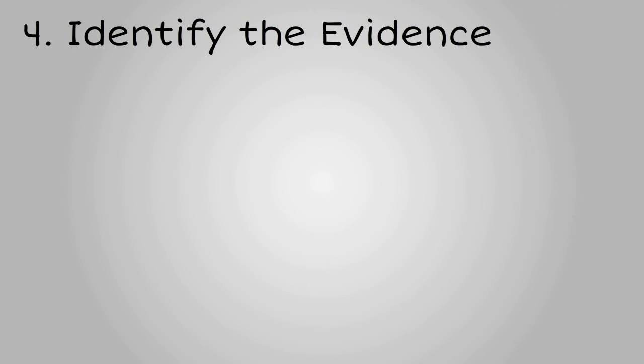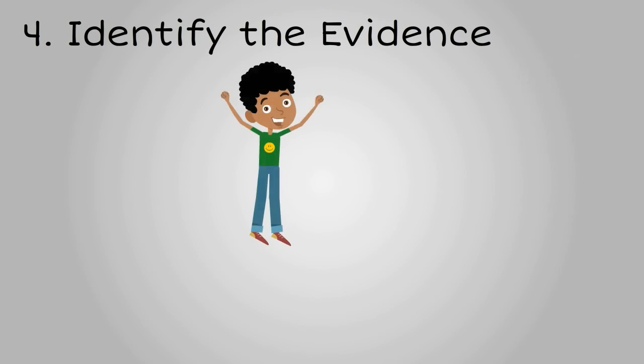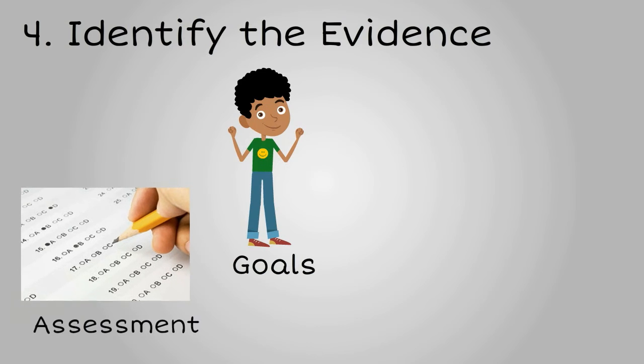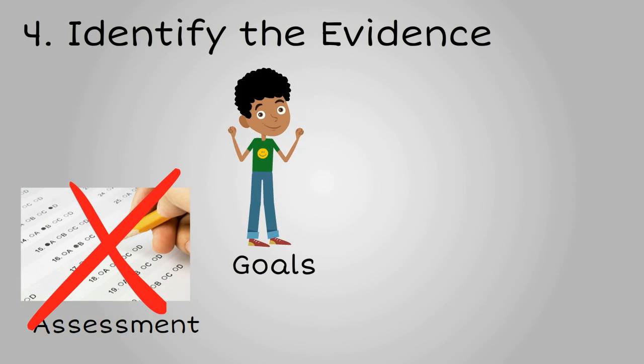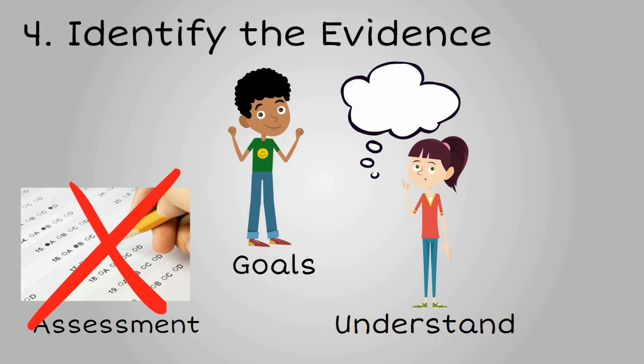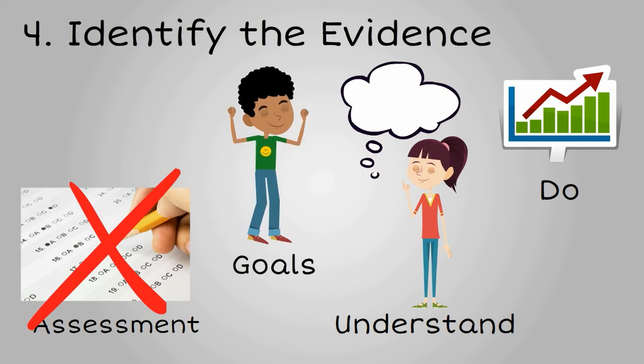And finally, the fourth step is to identify the evidence which demonstrates students have reached the goals. This evidence is not an assessment, but rather a description of what student mastery looks like, explaining what they should understand and be able to do when they have mastered the objectives.